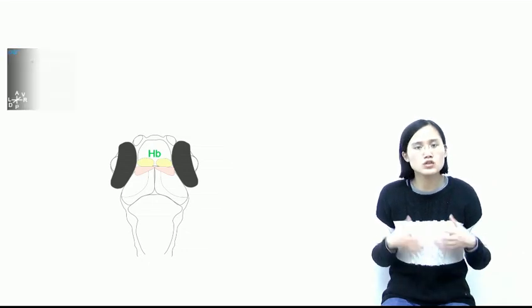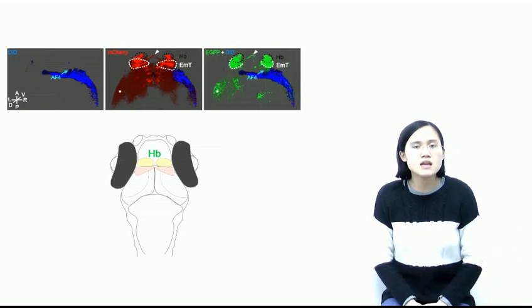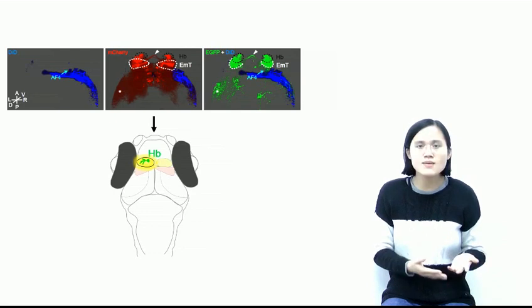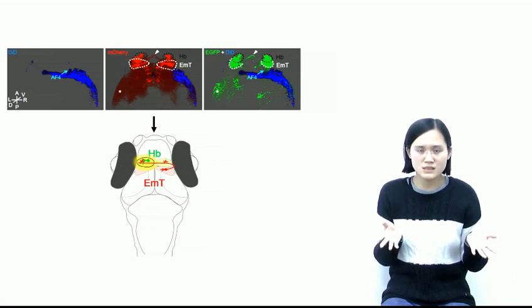Next, we asked how visual information is relayed to the left dorsal habenula. To explore the visual inputs of habenula, we combined morphological tracing and functional assays, and found that the left dorsal habenula neurons receive excitatory monosynaptic input from the entopeduncular territory, so-called EMT.